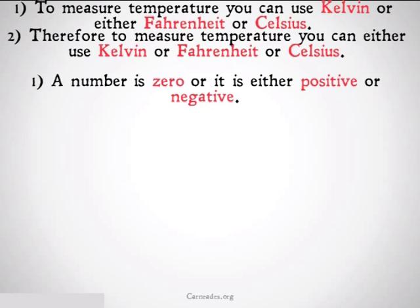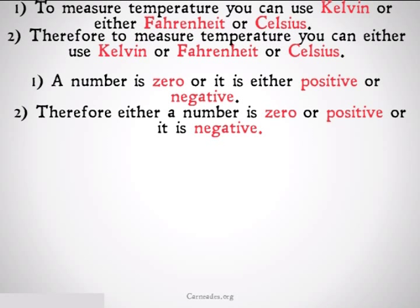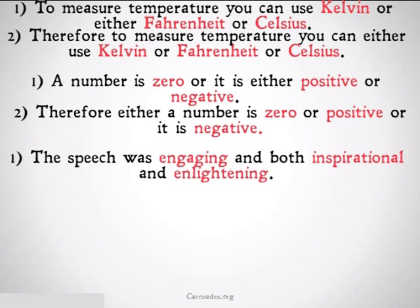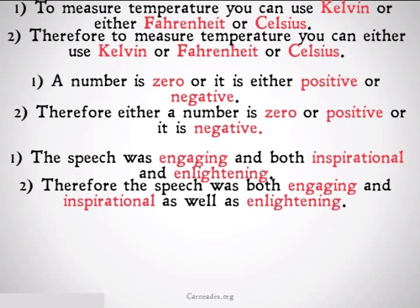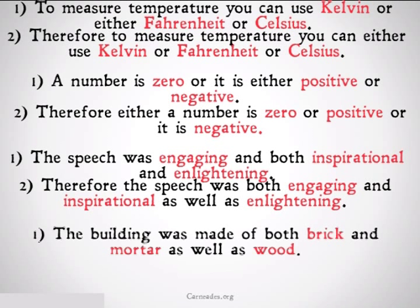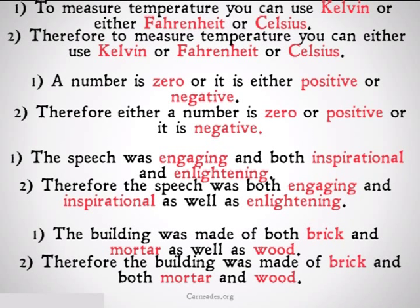A number is zero, or it is either positive or negative. Therefore, either a number is zero or positive, or it is negative. The speech was engaging and both inspirational and enlightening. Therefore, the speech was both engaging and inspirational as well as enlightening. The building was made of both brick and mortar as well as wood. Therefore, the building was made of brick and both mortar and wood.